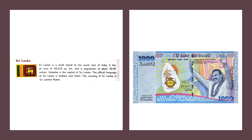Sri Lanka is the small island to the south east of India, surrounded by water from all four sides. It has an area of 65,610 square kilometers and a population of about 20.06 million. Colombo is the capital of Sri Lanka. The official languages are Sinhala and Tamil, and the currency is the Sri Lankan Rupee.